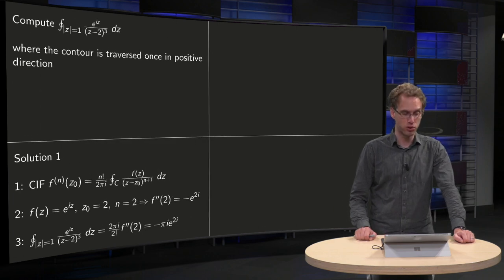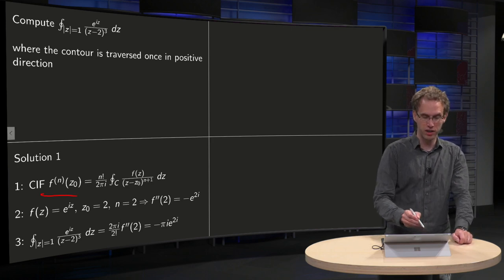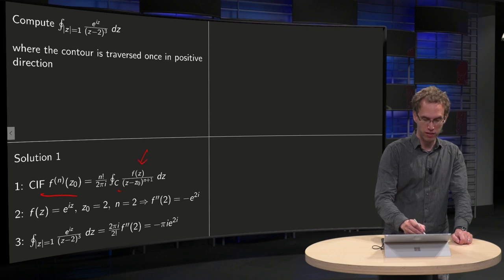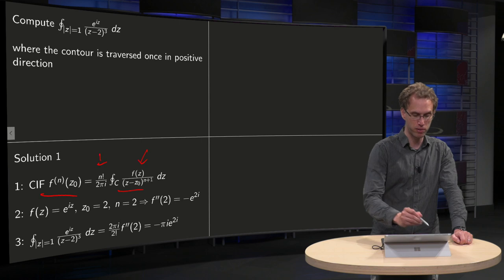First solution, we can try to use Cauchy's integral formula. The nth derivative of a function at z0 equals the integral of f(z) divided by (z minus z0) to the power n plus 1, and then here we have n factorial divided by 2 pi i.